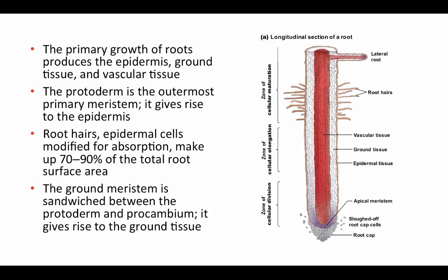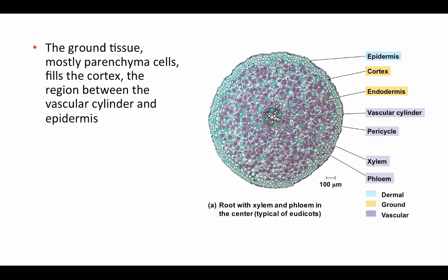The ground meristem is sandwiched between the protoderm and procambium, color-coded in white, and gives rise to different kinds of ground tissue. In roots, ground tissue mostly becomes parenchyma cells filling the cortex — the region between the vascular cylinder in the middle and the epidermis on the outside. Cortex refers to ground tissue between the vascular tissue and the epidermis. Any ground tissue interior to the vascular bundles is called pith. In roots, all the ground tissue sandwiched in the middle is cortex.